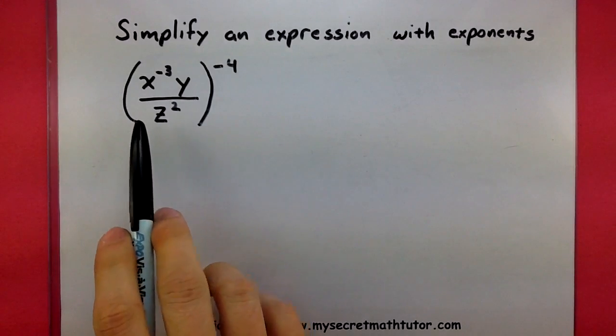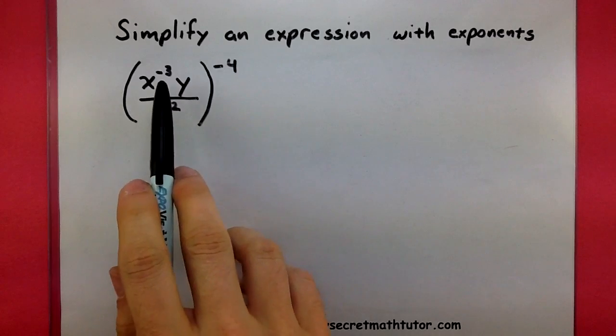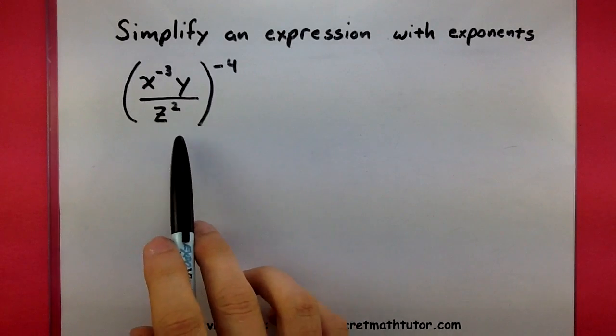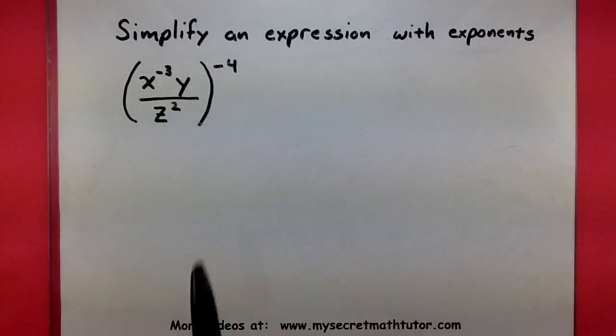So specifically, we're going to take a look at x to the negative 3 times y divided by z squared, and all of that is to the negative 4th power. So watch how I apply different rules for exponents to go ahead and simplify this.